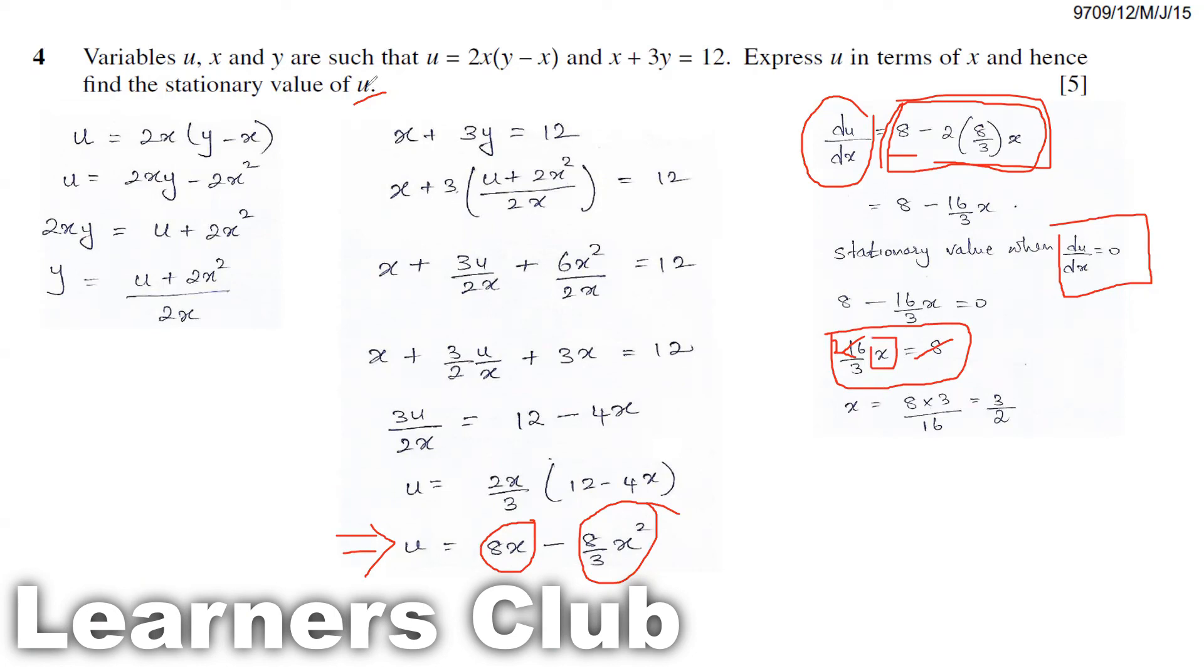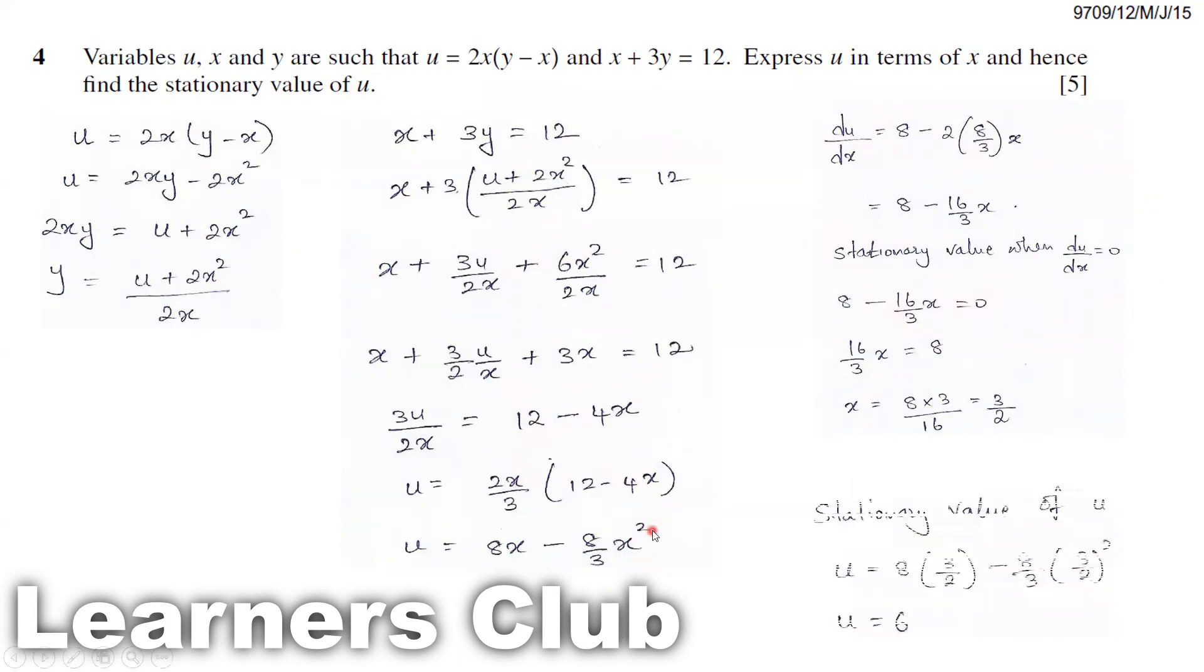To obtain the stationary value of u, we need to substitute our value of x as 3 by 2. In other words, it means stationary value of u is obtained when x equals 3 by 2. So this is your u. And for finding the stationary value of u, in place of x, we substitute the value 3 by 2. By doing so, I got the value u equals 6.